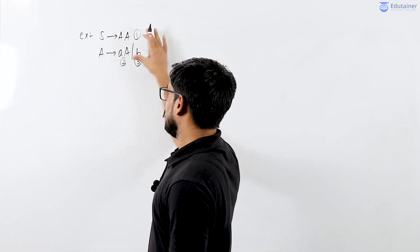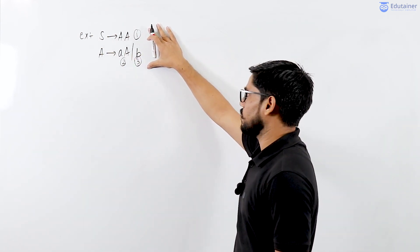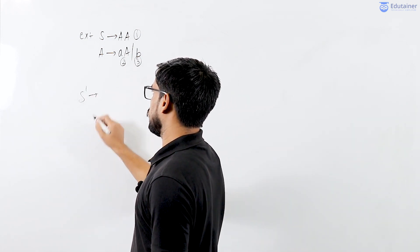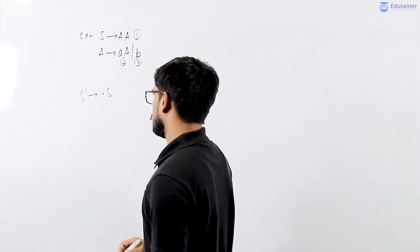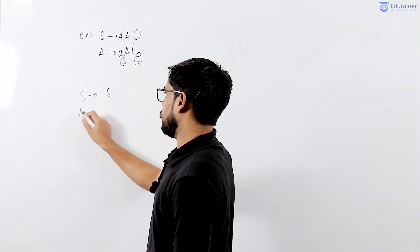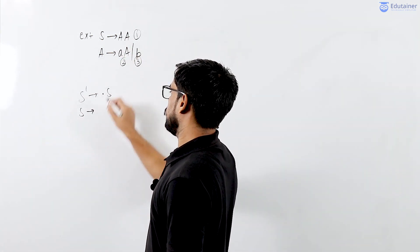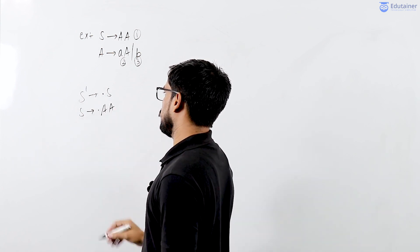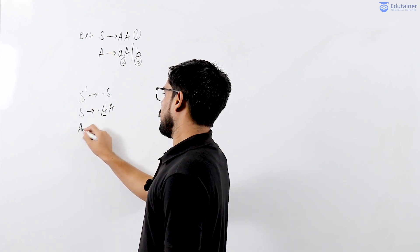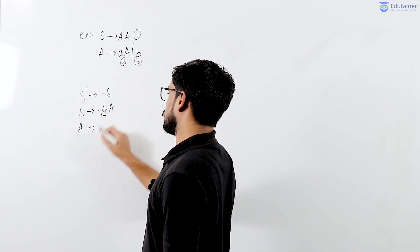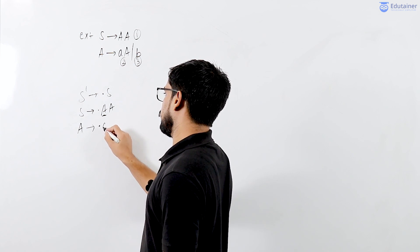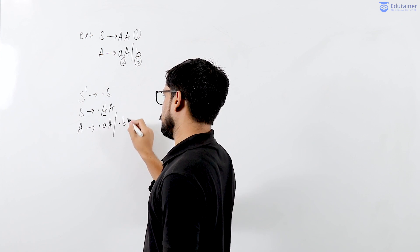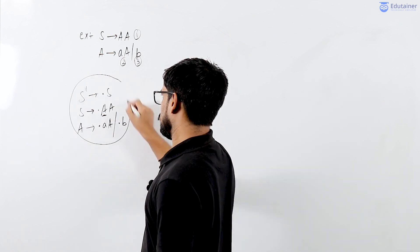We need to construct the canonical collection of LR0 items for this grammar. We will start with the augmented production S-dash derives dot S. For this S I need to add the production of S, which is S derives dot capital A capital A. For this capital A I have to add the production of A: A derives dot a capital A or dot B.